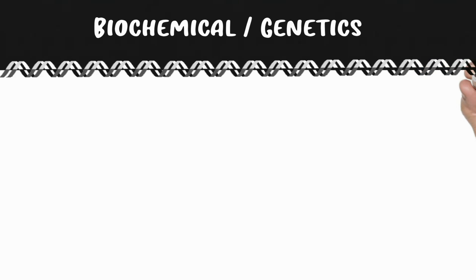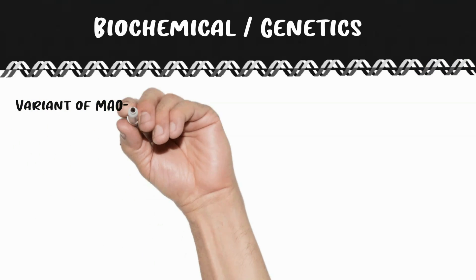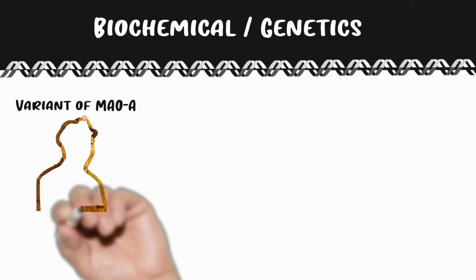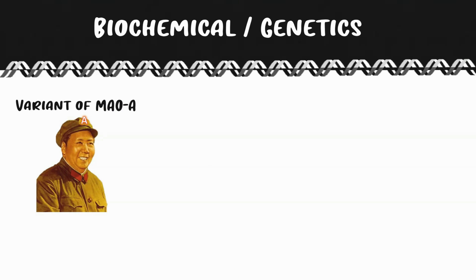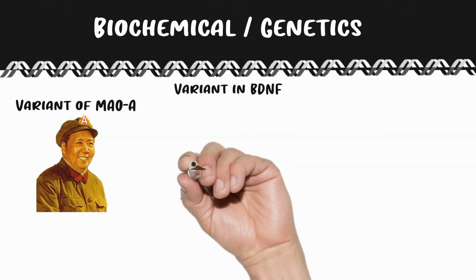The first genetic factor is variation in monoamine oxidase A (MAO-A), an enzyme responsible for breaking down neurotransmitters — specifically norepinephrine, serotonin, and dopamine. If someone has the low-expression variant, you'd expect higher levels of those monoamine transmitters. People with this variation are more likely to develop violent and antisocial patterns of behavior.